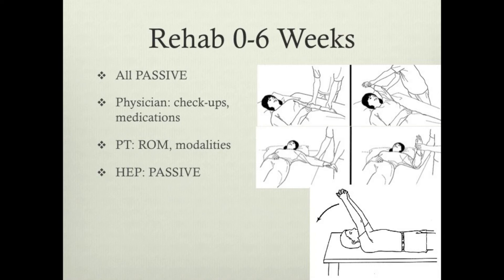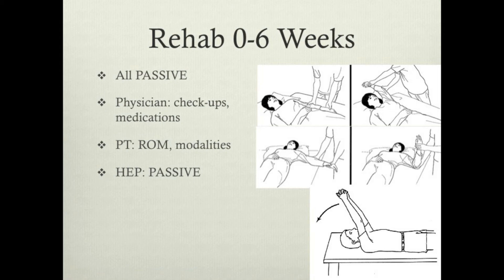Rehab during day one through approximately six weeks is all passive — you as the patient will not do anything active with that shoulder. You just have to let it relax and hang there. Physical therapists will do range of motion exercises, some mobility exercises with the joint, and use pain-relieving modalities such as ice, heat, electrical stimulation, and dry needling. You will also be given a home exercise program — again, all passive, with no active movement of that shoulder. You'll meet with your physician a number of times during this section as checkups, to adjust medications if needed, and to see how you're doing.